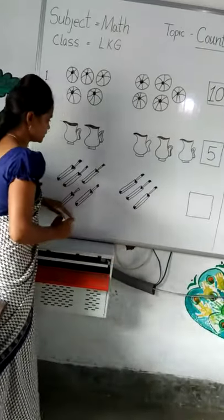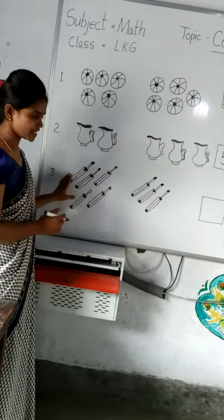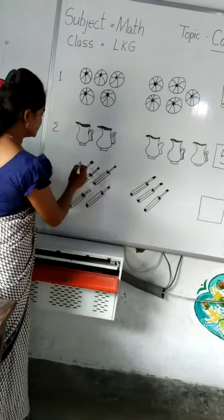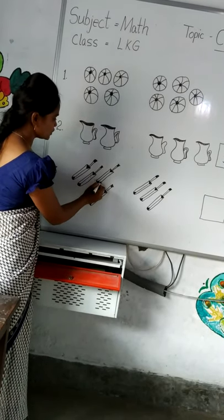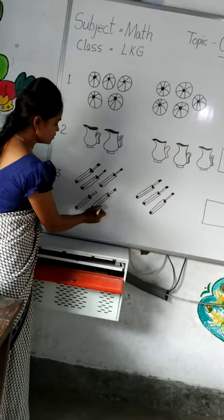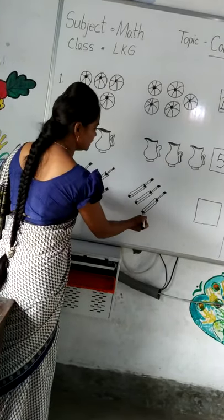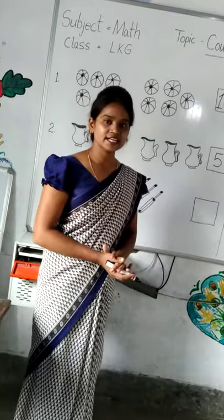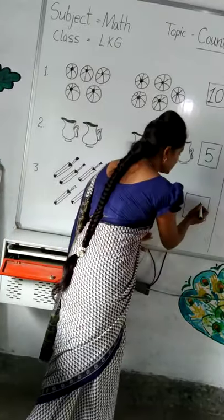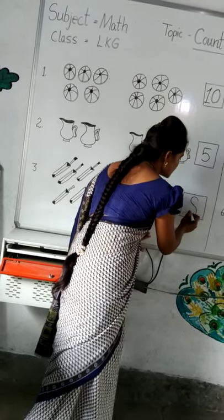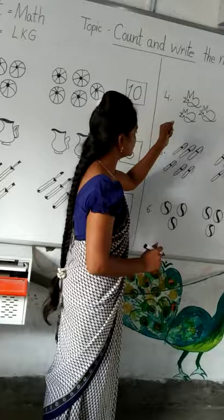Come to this picture. We can count how many jets are there. Let's start. 1, 2, 3, 4, 5, 6, 7, 8. How many jets are there? There are 8 jets. We can write in the box. 8.